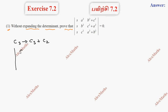So, first column: s, s, s. Second column: a squared, b squared, c squared. Third column — second column added — gives a squared plus b squared plus c squared.